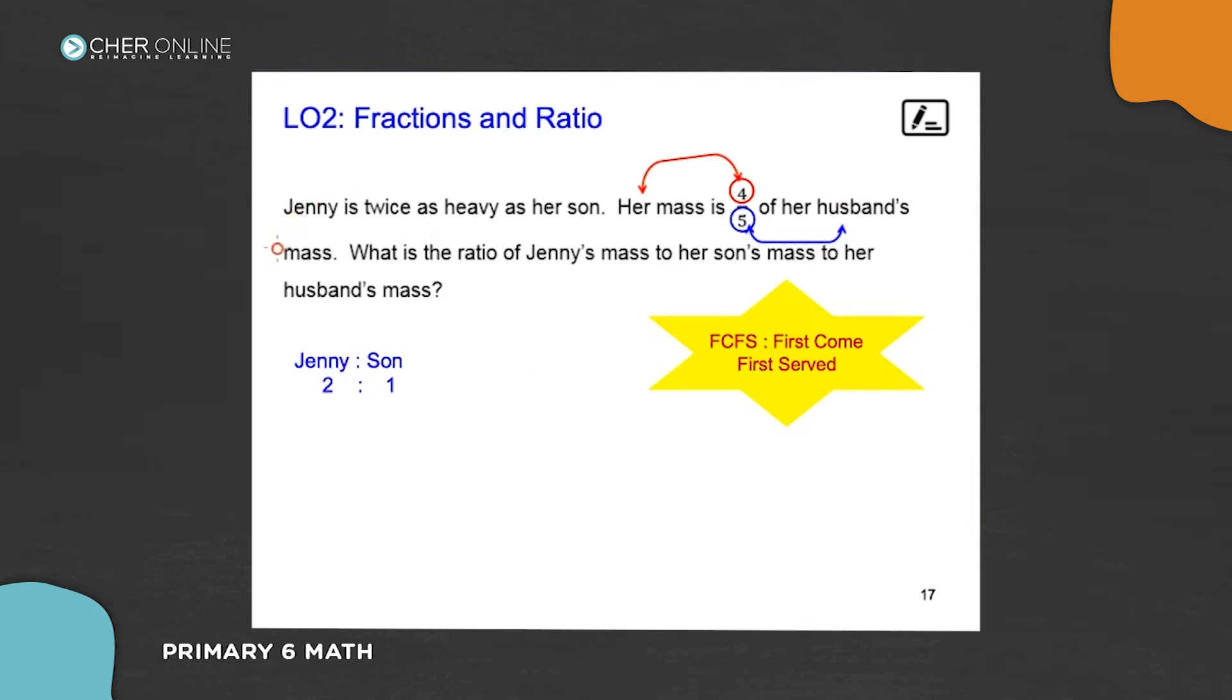And when we write out in ratio form, Jenny is twice as heavy as her son, so Jenny to son is two to one. Jenny to husband is four to five. Then, after that, we know that Jenny has to have the same mass. Cannot change her mass just like that because she is comparing with other people.